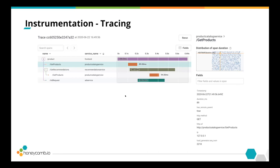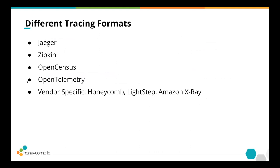I wanted to put up a screenshot of Honeycomb showing a trace in an application, and also for anyone who hasn't used tracing before — whether with Honeycomb, Lightstep, or open source platforms like Jaeger or Zipkin — a trace can be thought of as a collection of causally related spans. In this example, I have a request to a service called frontend at endpoint slash product, which then made calls to a product catalog service, a recommendation service, and an ad service. You can see the hierarchy of calls, the duration of each, and each span has an arbitrary number of fields or attributes associated with it.